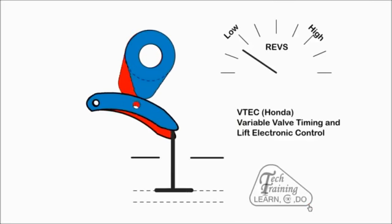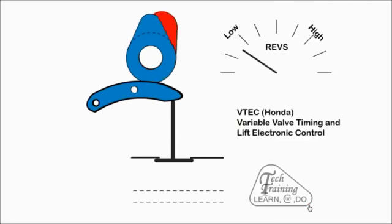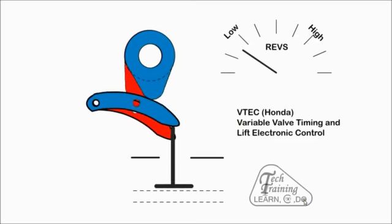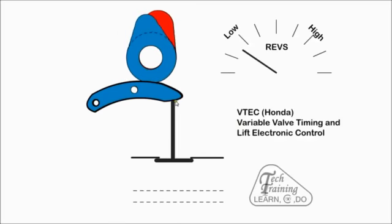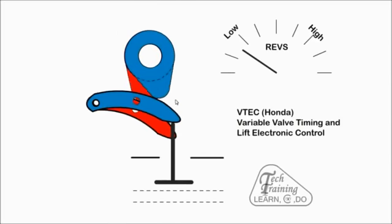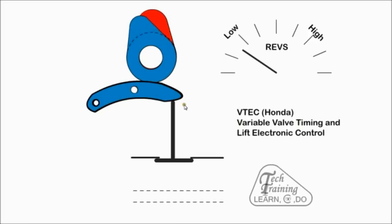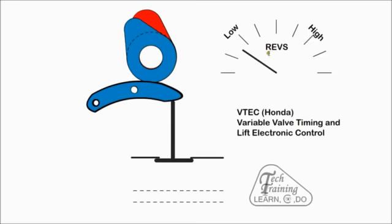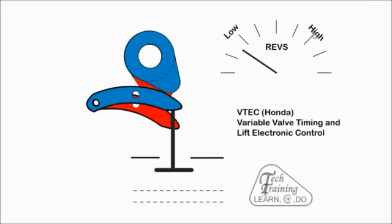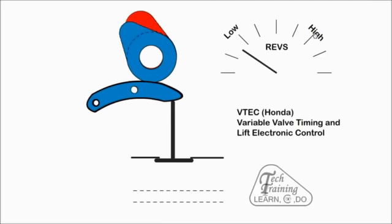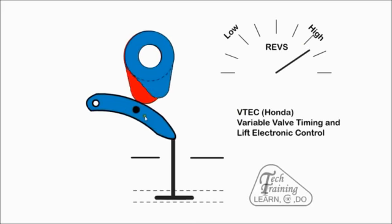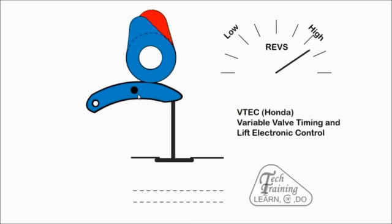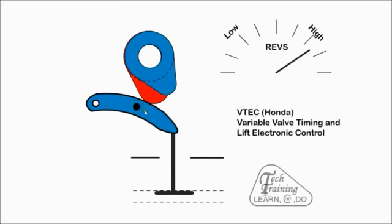With VTEC, the camshaft has two separate lobe profiles. The valve is in contact with the blue rocker arm. At low speed, the cam operates on the standard profile for efficiency. At high speed, the pin is activated by oil and the rockers are joined together when they are aligned, thus altering the timing and lift for maximum power.